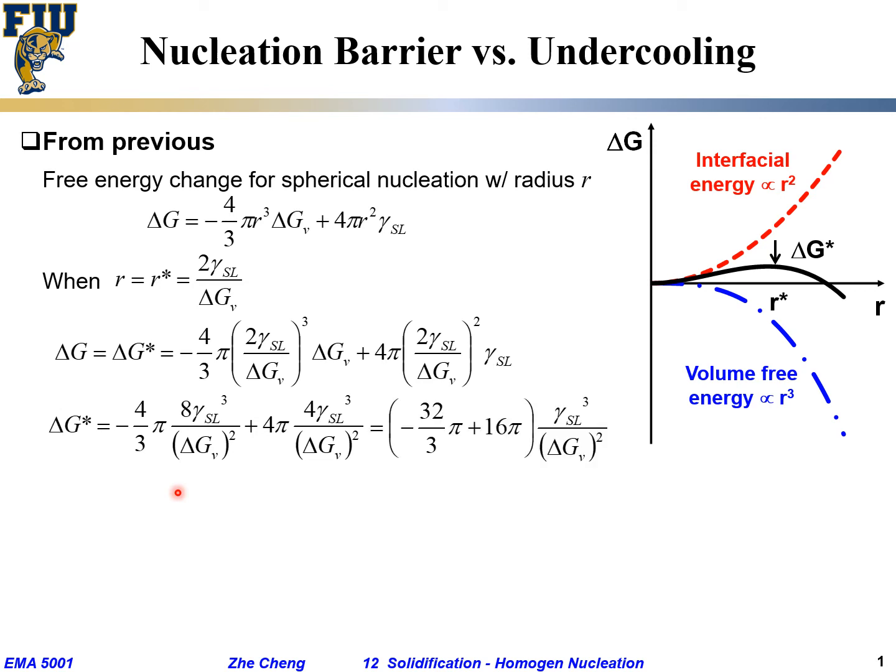Now if we combine these together, we're going to have 3, 4 times 8 is 32 minus 4 times 4 is 16π. The common factor is γ interfacial energy to the power of 3 divided by ΔGv². Within the bracket, we can further simplify.